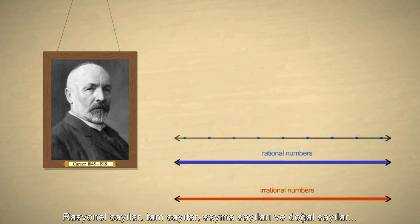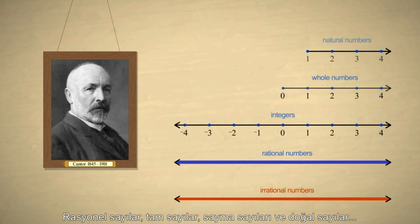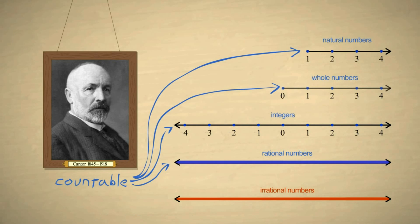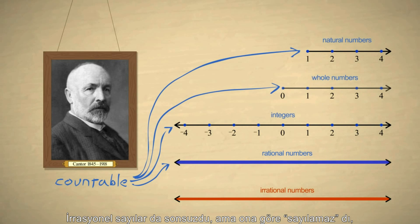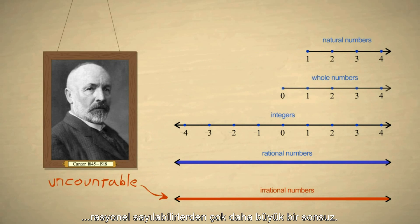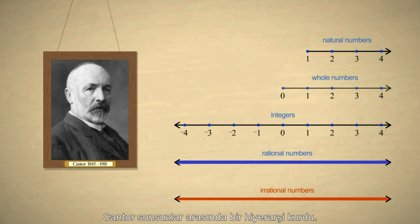Rational numbers, integers, whole numbers, and natural numbers were infinite, but a particular type of infinite he called countable. Irrational numbers were also infinite, but what he called uncountable — a much larger infinity than the countable rational numbers. Cantor established a hierarchy of infinities.